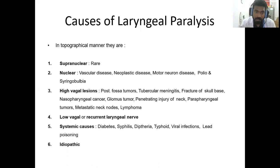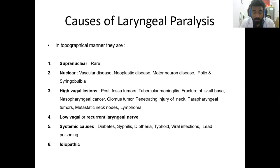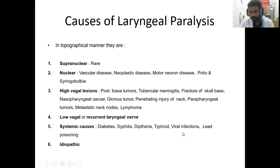High vagal lesions are above the ganglion level. Below the ganglion level is called the low vagal lesion or the recurrent laryngeal nerve lesion. Systemic causes include diabetes, syphilis, diphtheria, typhoid, viral fevers, lead poisoning, and other causes can be idiopathic.